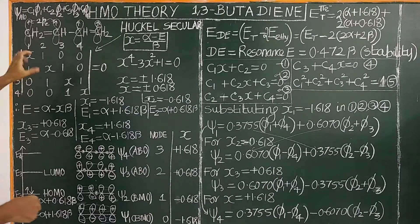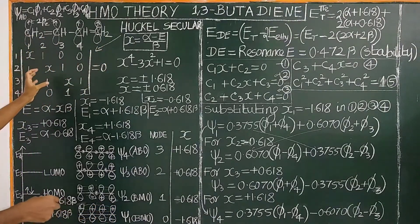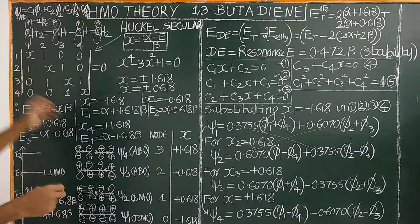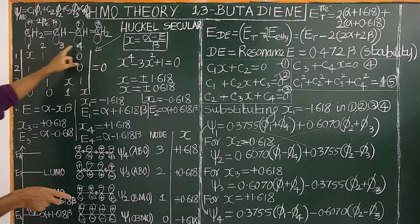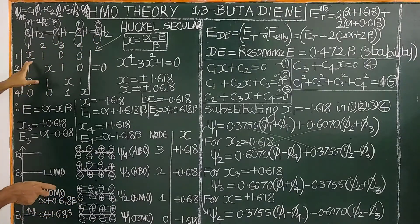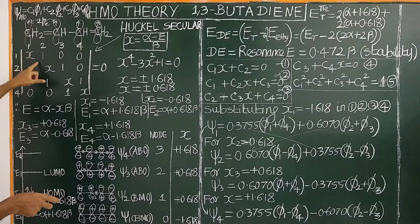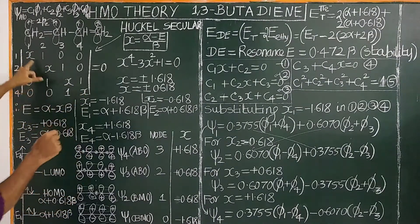Now let us see how the Hückel secular determinant is constructed. We write a 4×4 matrix (rows and columns labeled 1, 2, 3, 4 for the 4 carbon atoms), and first fill the diagonal elements. All diagonal elements are x.